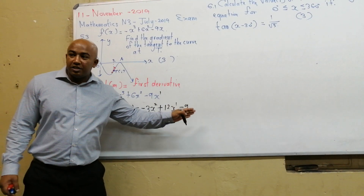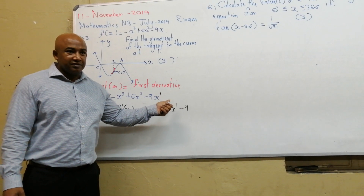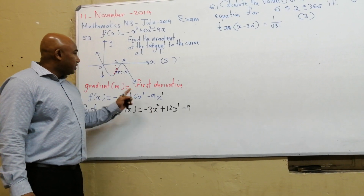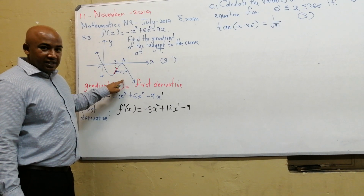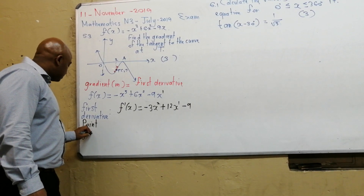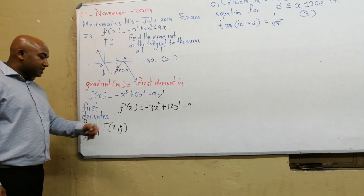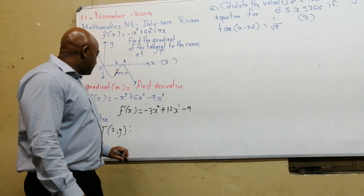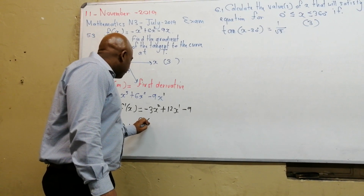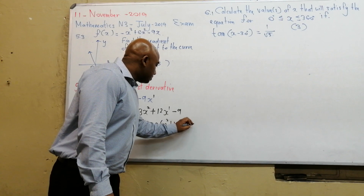This first derivative is the equation we will substitute into to find the gradient. We need to substitute a value — the x-coordinate of the given point. The point given has x-coordinate 2, and we are not sure of the y-value, so we just write it as y. We substitute x equals 2 into the first derivative: f prime of 2 equals minus 3 times 2 squared plus 12 times 2 minus 9.